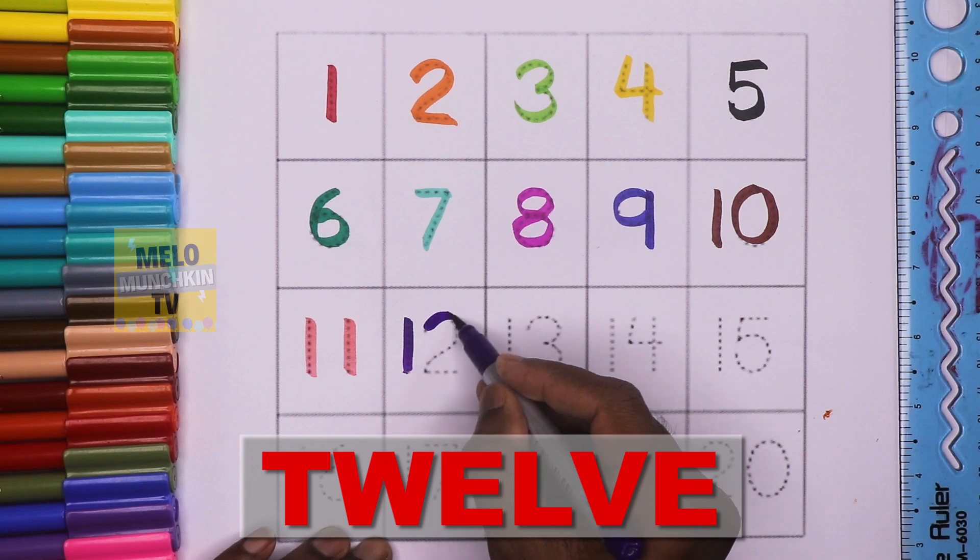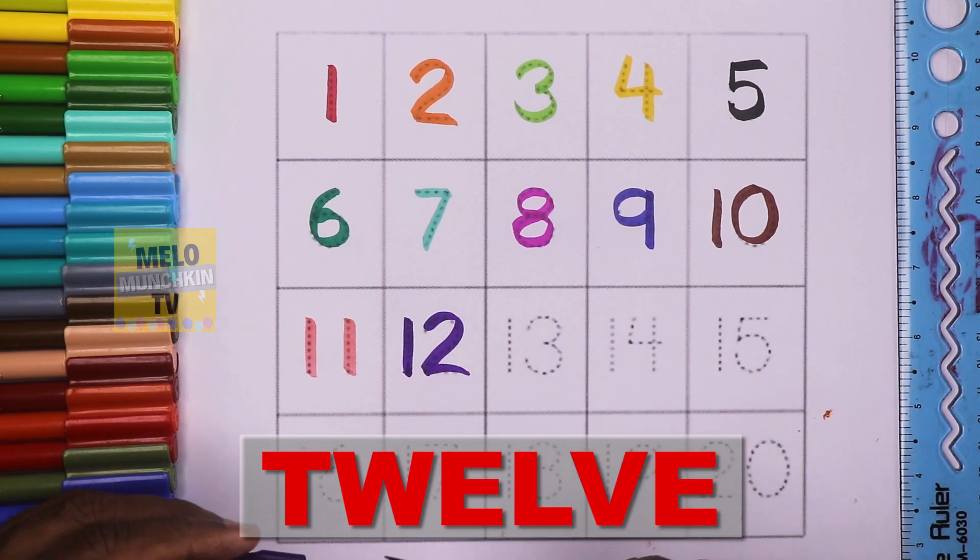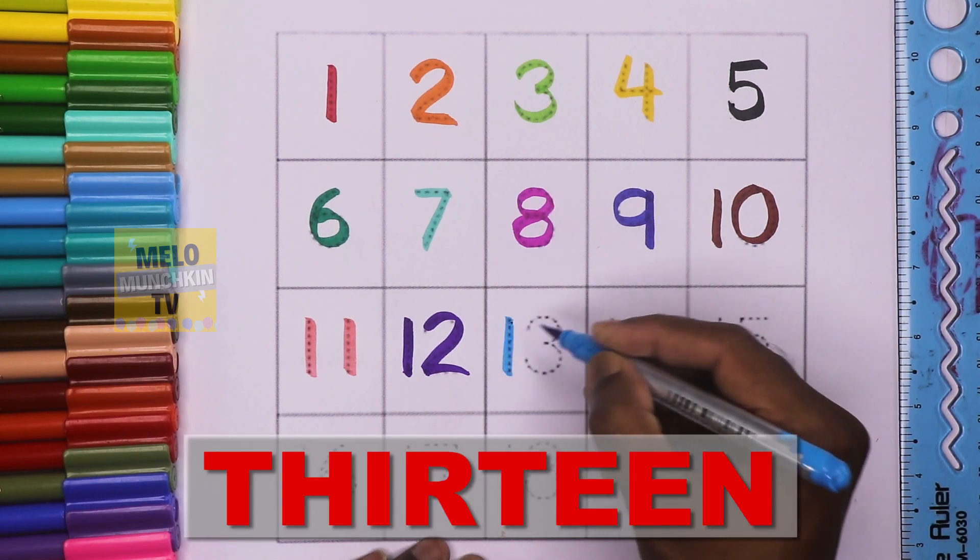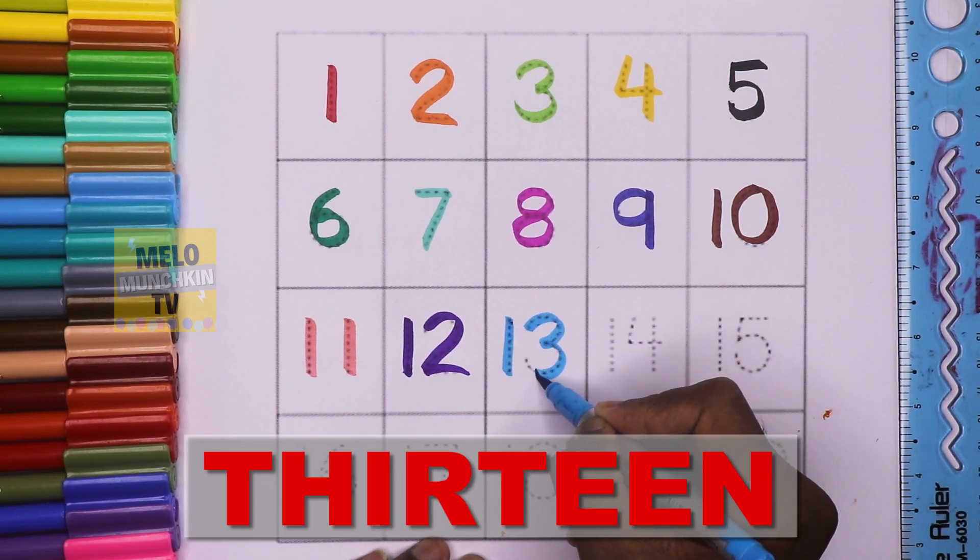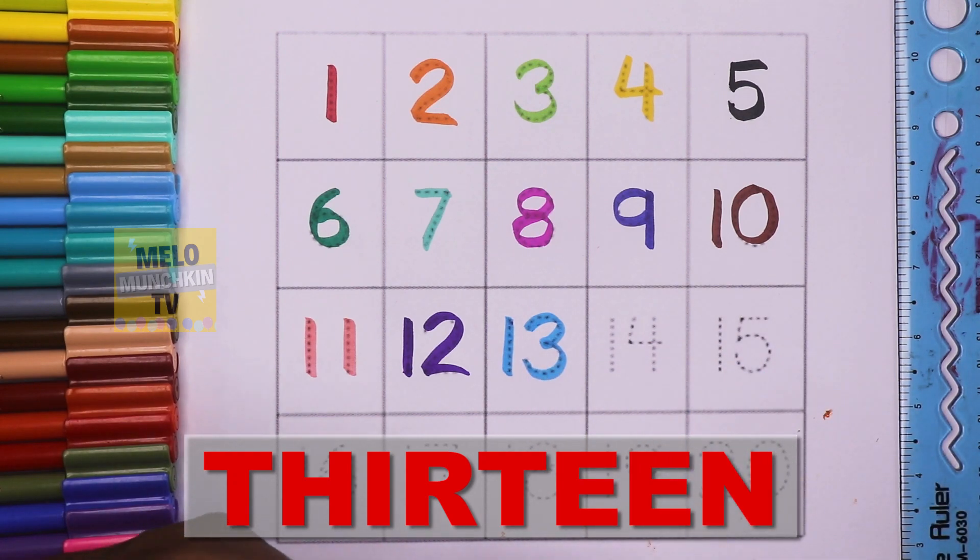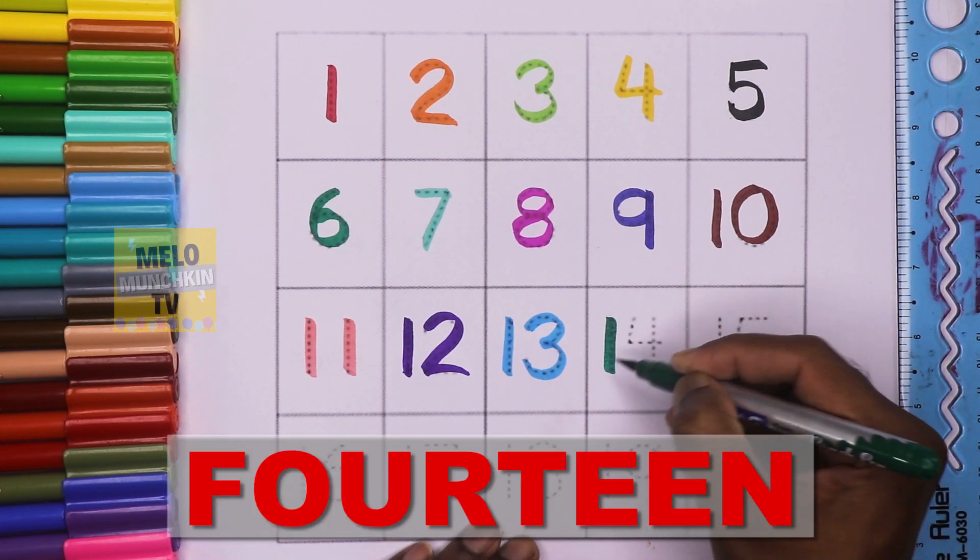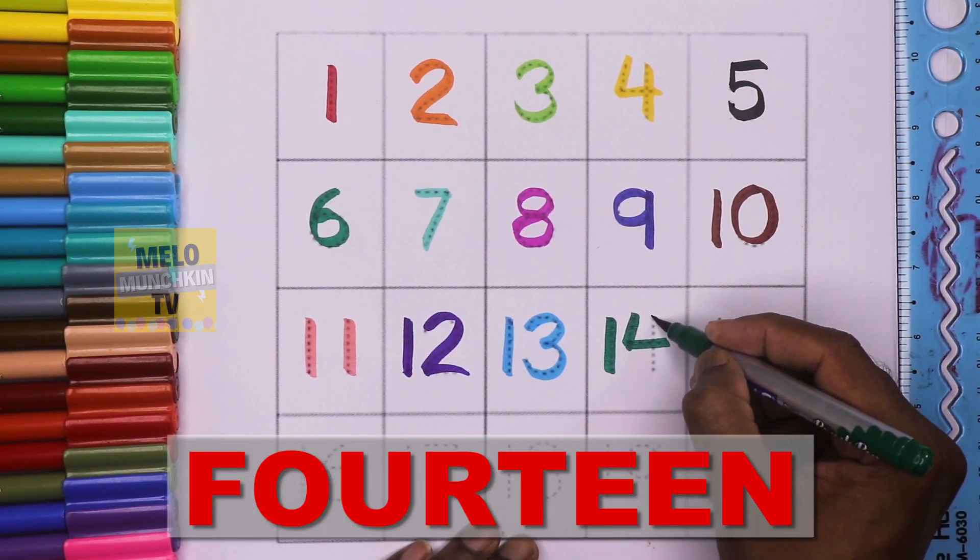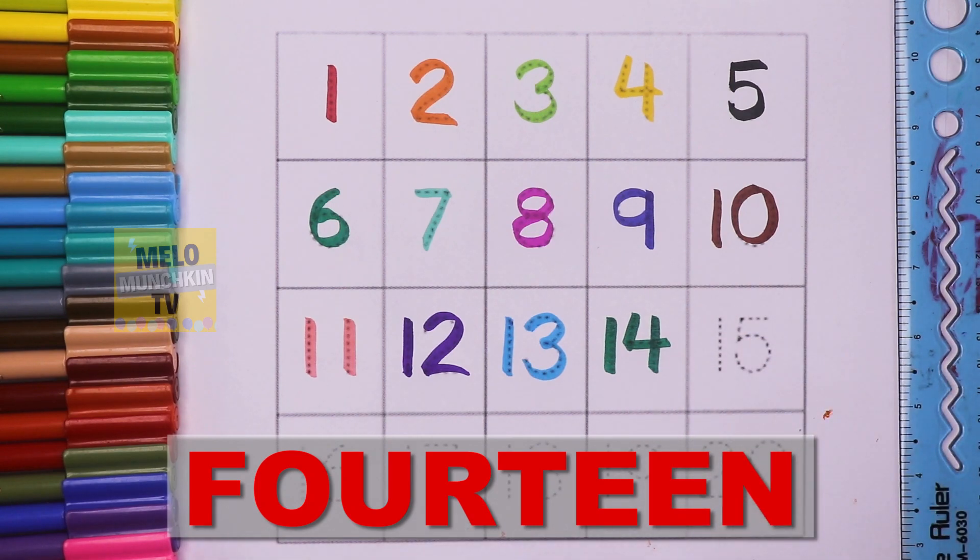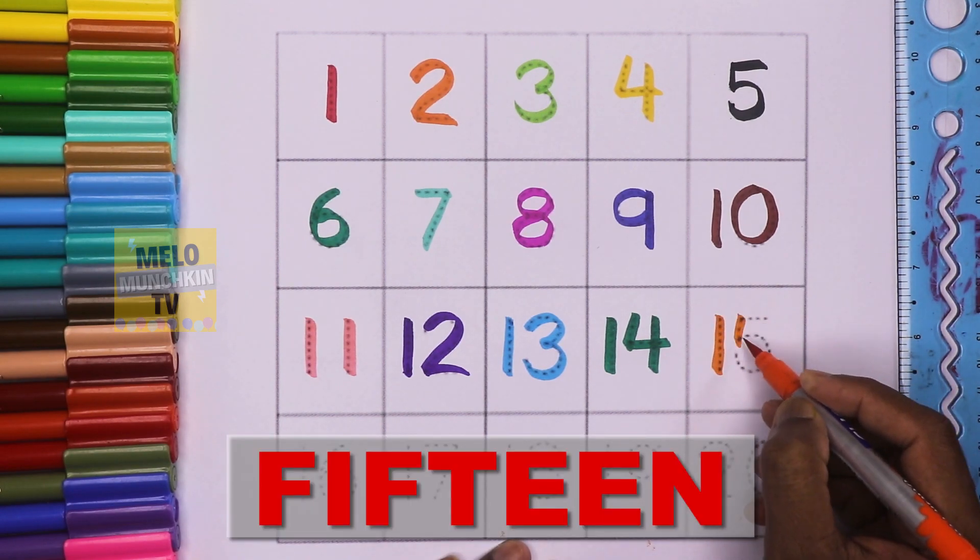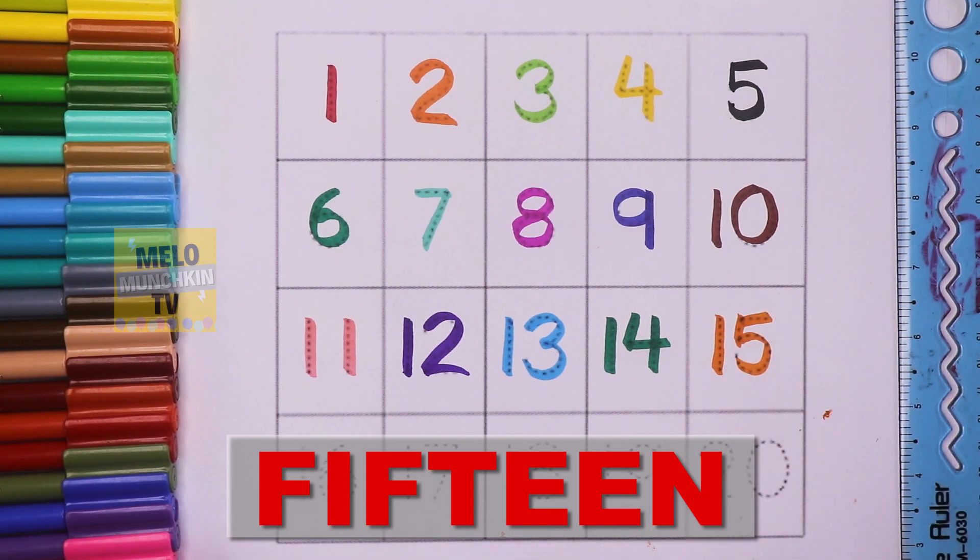Thirteen: T-H-I-R-T-E-E-N, thirteen. Fourteen: F-O-U-R-T-E-E-N, fourteen. Fifteen: F-I-F-T-E-E-N, fifteen.